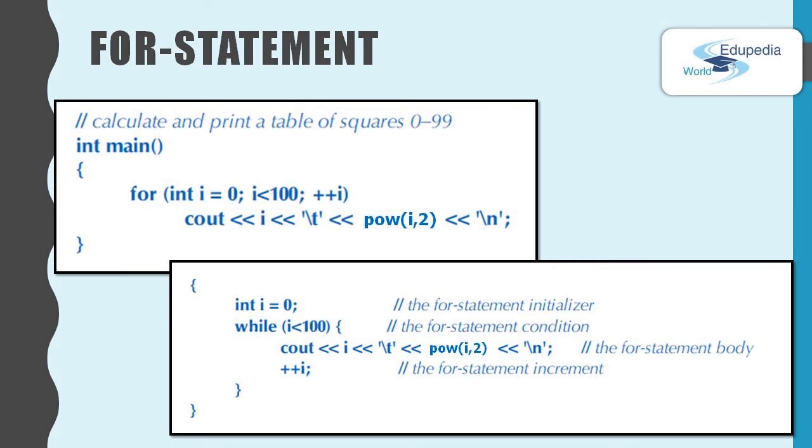When you execute the for loop, this is how it goes. It executes the first part, int i equals 0, and then goes to the second part, i less than 100.